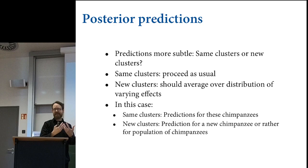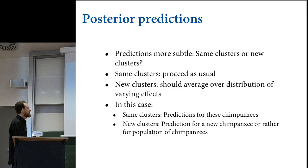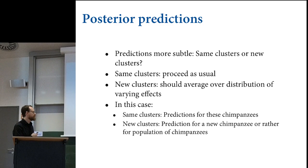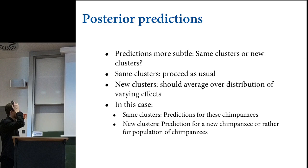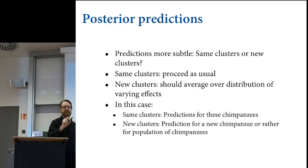You're interested in the population, and the predictions you want to make come from the second level of the model—from the regularizing prior, not from the top-level parameters. The varying intercepts are disposable to you in that case. The entities in the sample we got are temporary and ephemeral. We're interested in making generalizations to some new subpopulation. So the way we think about prediction has to change.